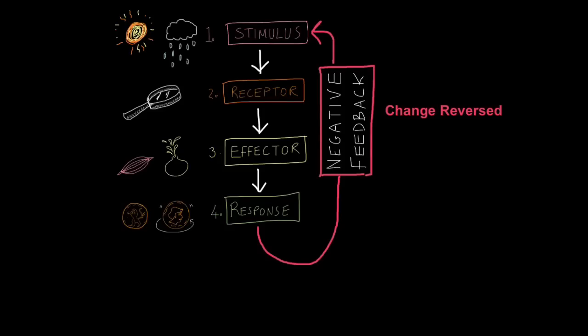So homeostasis is maintained by something called negative feedback. Negative feedback systems keep us alive when our internal environment changes. Let's look at the negative feedback pathway. It's very similar to what you've seen before in the nervous system. Any negative feedback system in homeostasis starts off with a stimulus. A stimulus is the change in the internal environment, for example your body temperature goes up or down, your blood sugar levels go up or down.